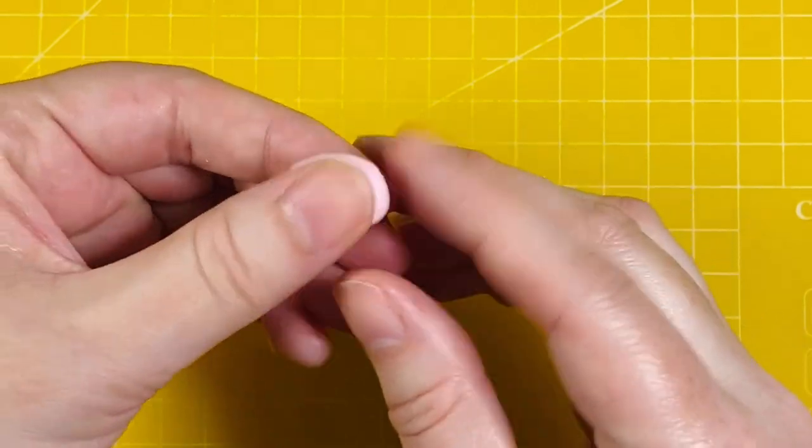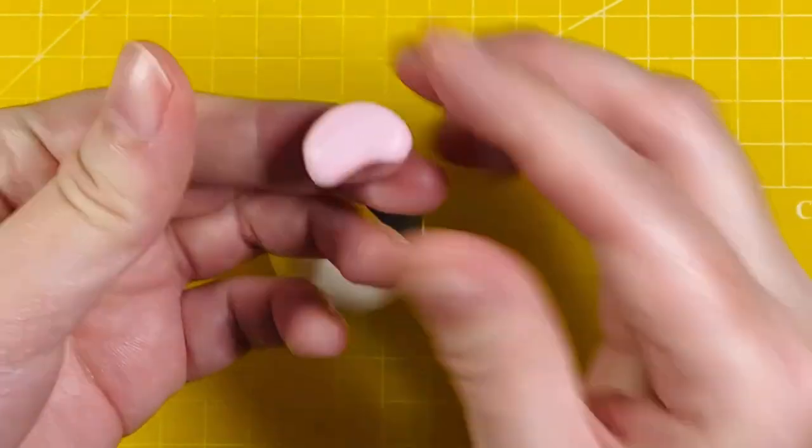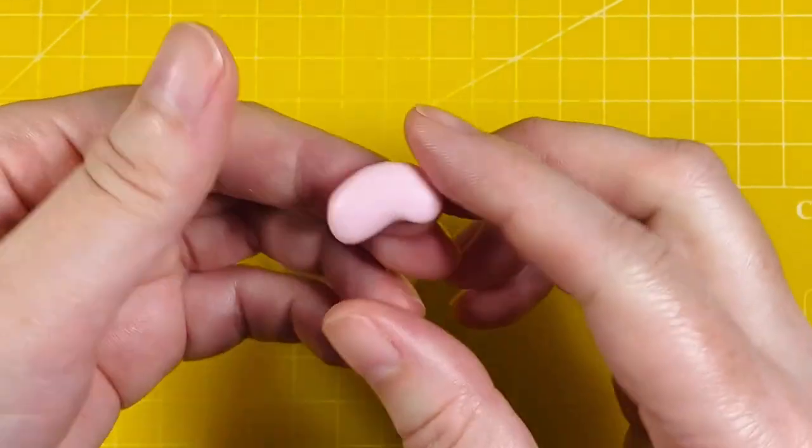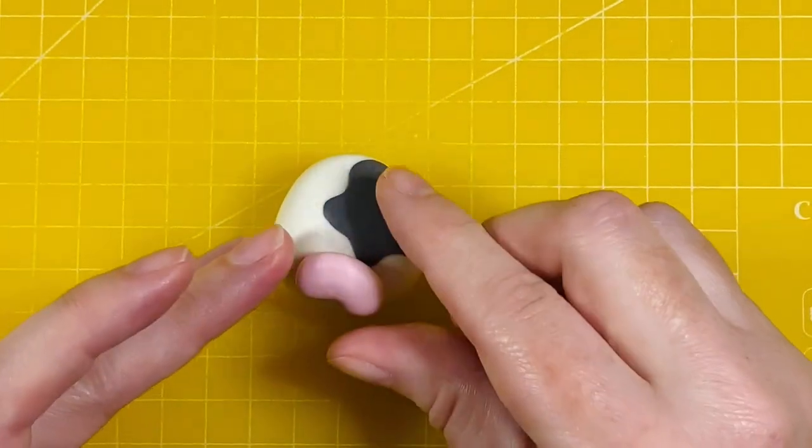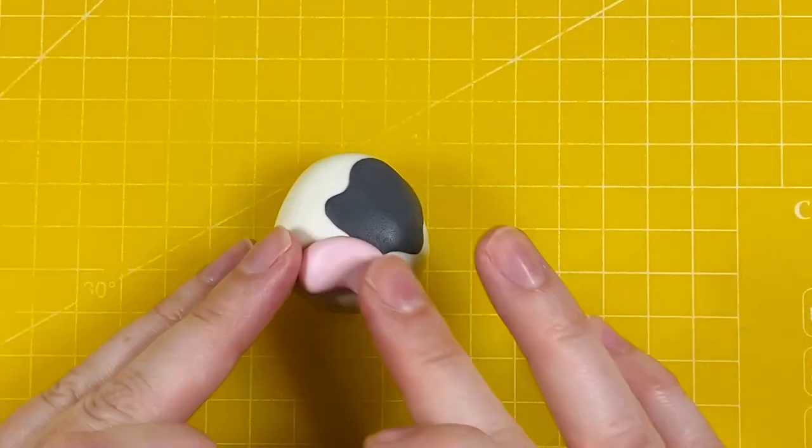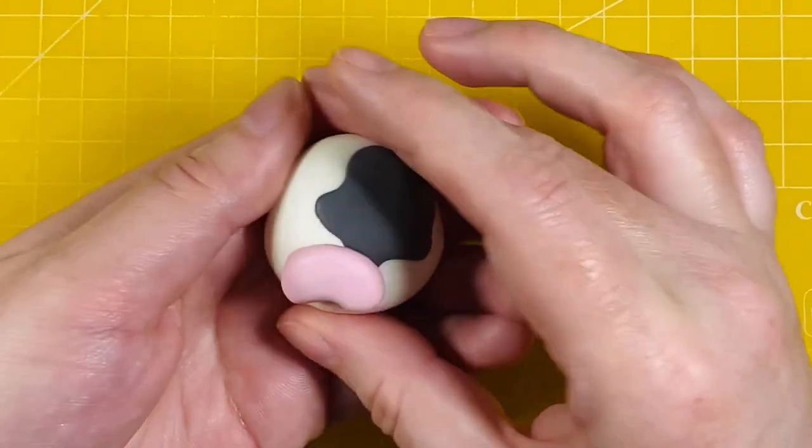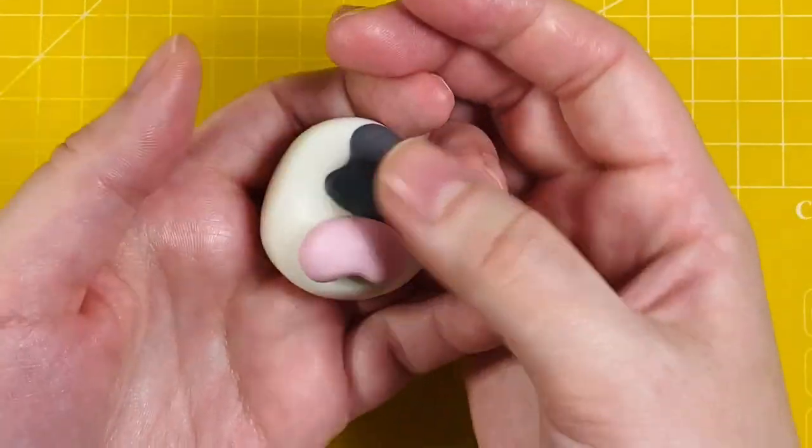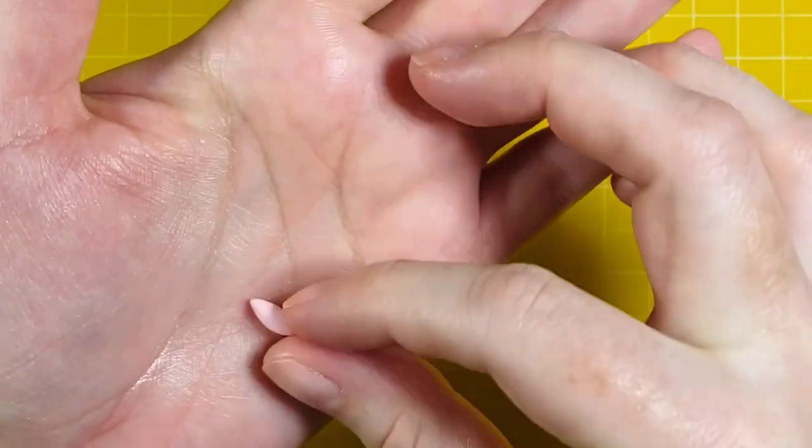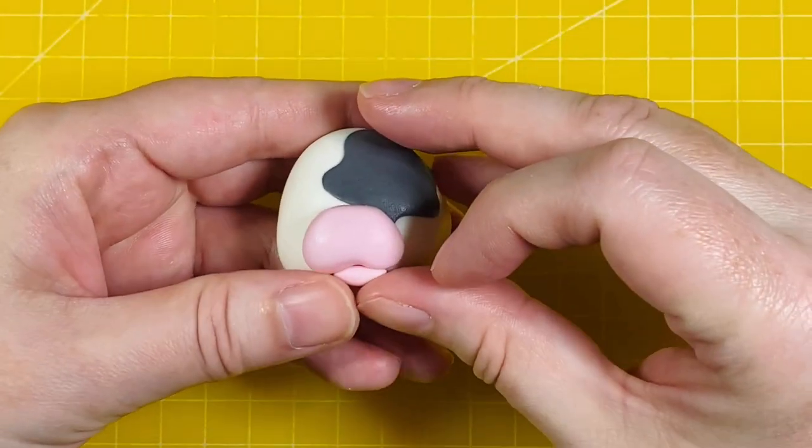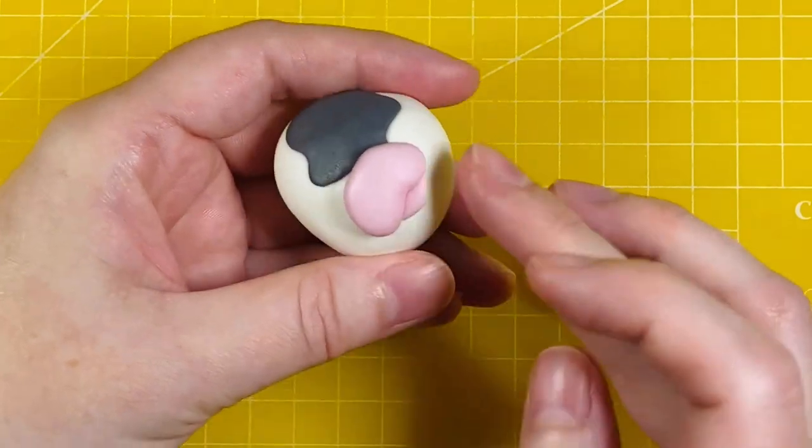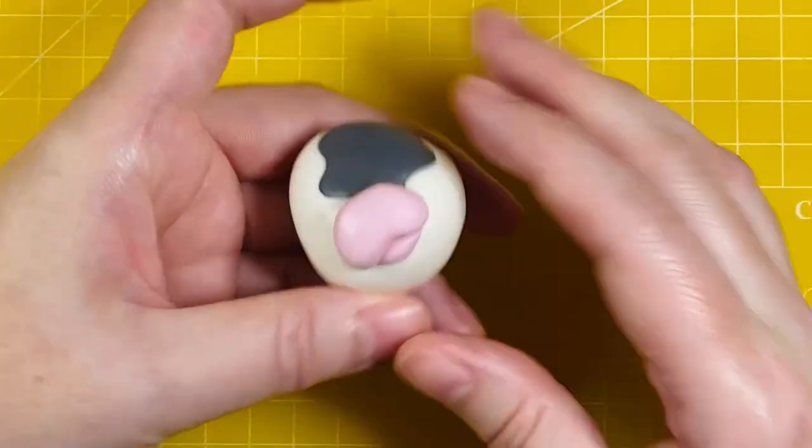For the snout, I've got 1.4 grams of white modeling paste colored with Bazooka Pink by Magic Colors—really nice pale pink color. I've shaped that into a jelly bean type shape and attached it to the bottom half of the face. If you want to make your own glue, you can use one part tylose powder to 30 parts cold boiled water. Give it a mix and leave it overnight, and by morning you will have a lovely glue.